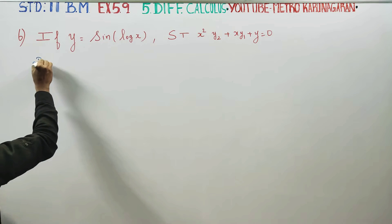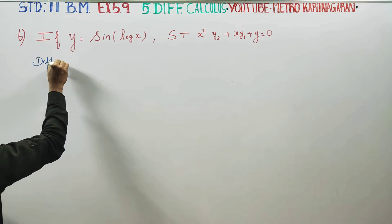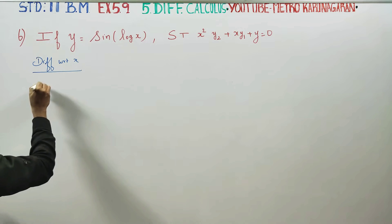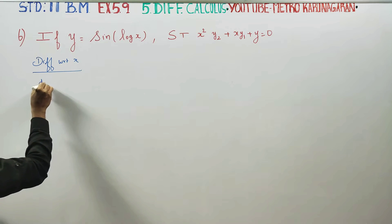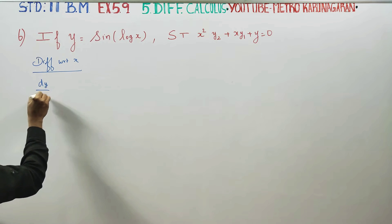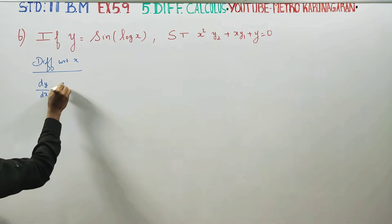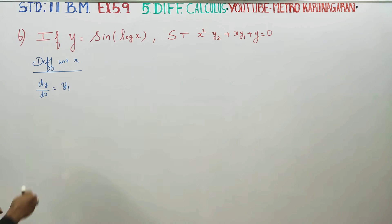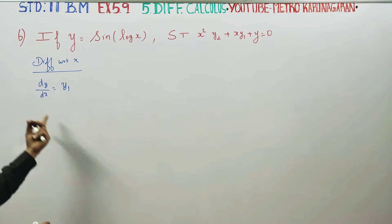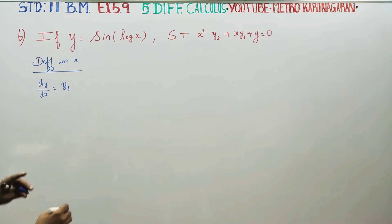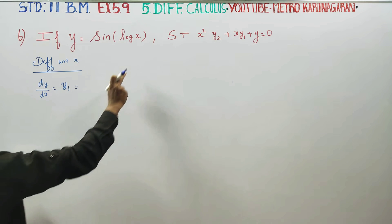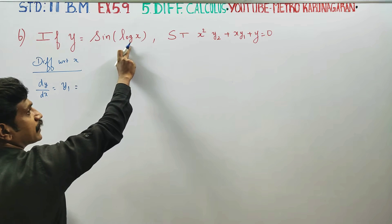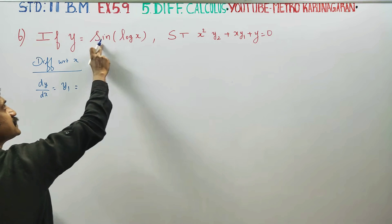First I am going to differentiate with respect to x. When we differentiate y we get dy/dx, denoted as y1. So dy/dx, which we call y1, equals the derivative of sin(log x) — applying chain rule with log x.